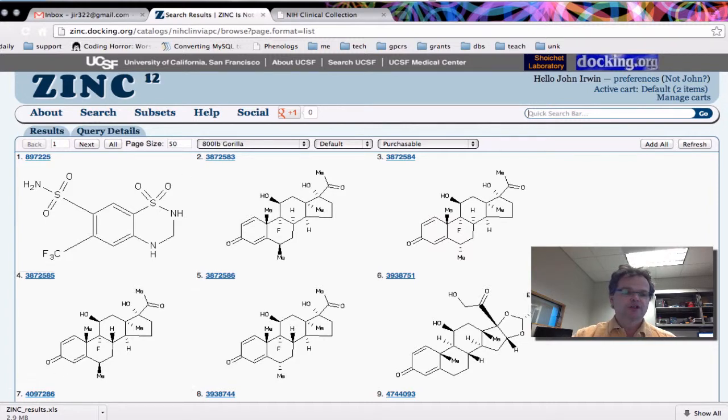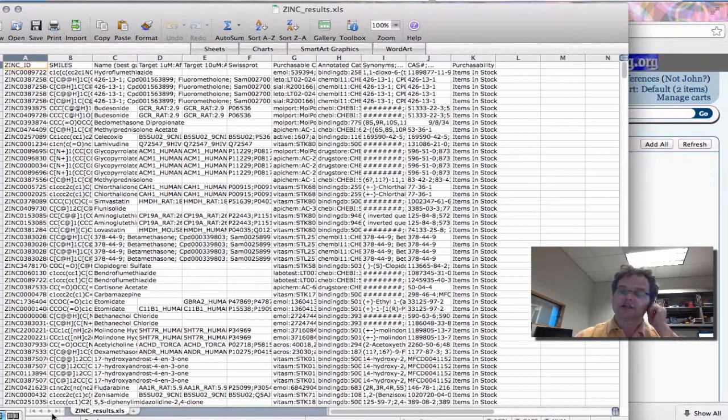Okay, so we're still up to 2.9 megabytes, and there, now it's finished. Okay, so now we're going to click on zinc results.xls, and it brings up Excel. Let's go through the results.